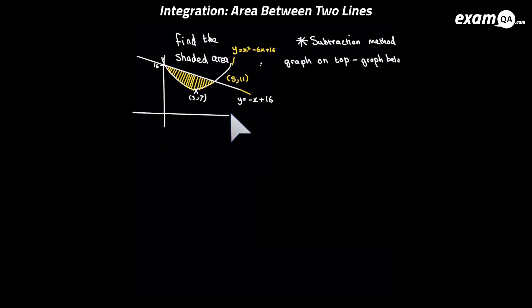Okay so how do we do this? We first identify which graph is on top on the shaded region. And it's the equation of the line which is on top. So what we do is we do the equation of the line, subtract the equation of the curve. So to know which way you do the subtraction which goes first, it's the graph which is on top over the shaded region which goes first. So we have the minus x plus 16 minus the equation of the curve. And we can simplify that down.